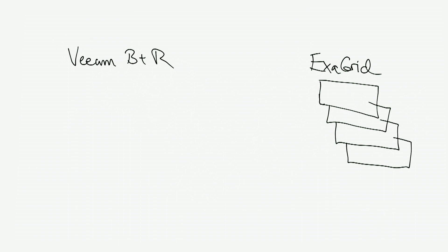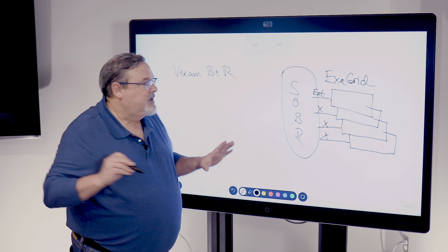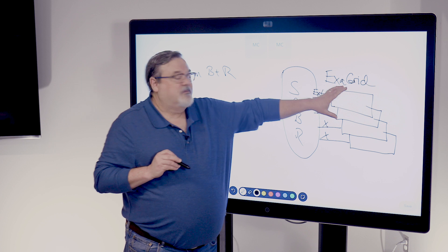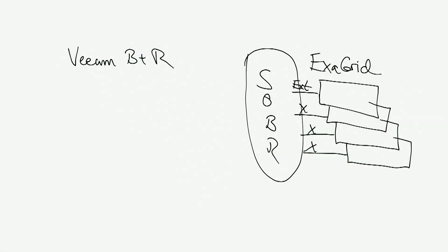Each one of these Exegrid servers is made visible to Veeam through an extent being configured for each one. I'll just draw these as X's. And then in the Veeam backup and recovery configuration, all of these are put together into a large scale-out backup repository, which allows Veeam to make the decision about which Exegrid storage appliance a particular backup is sent to, relieving you of having to figure out which backup goes where. Veeam takes care of that courtesy of the scale-out backup repository configuration.